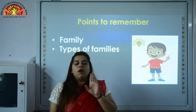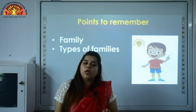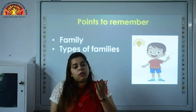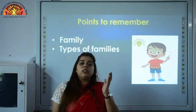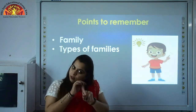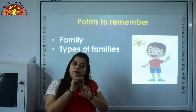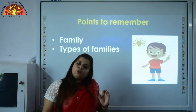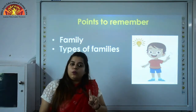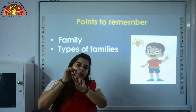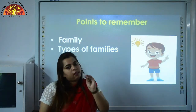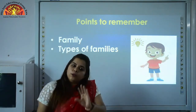In some families, grandparents, uncles, aunts and siblings also live. Families are divided into two categories: nuclear family and joint family. A nuclear family may be big or small, but in that family only father, mother and children live. A family in which father, mother and children live is called a nuclear family.